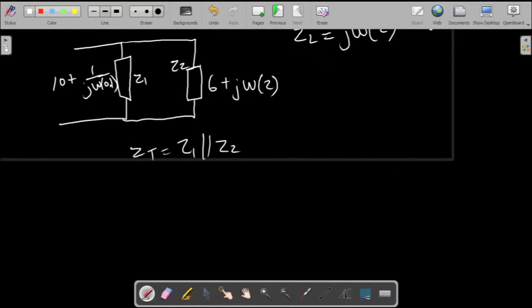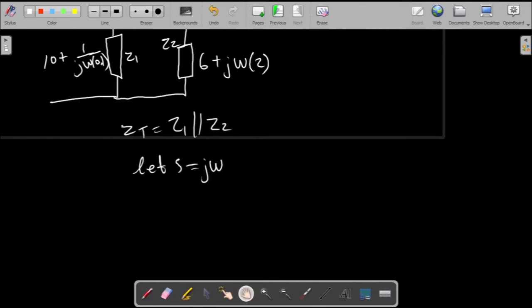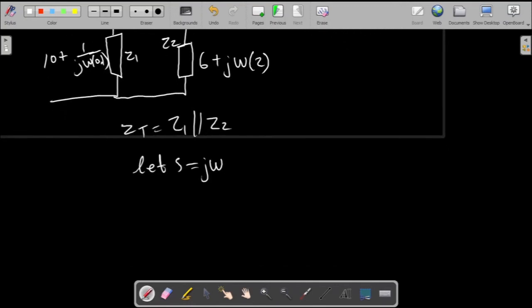And just so we simplify our analysis, let s equal j omega. So wherever we see j omega we could just put s.